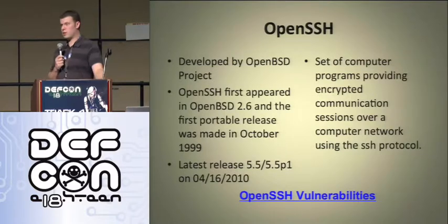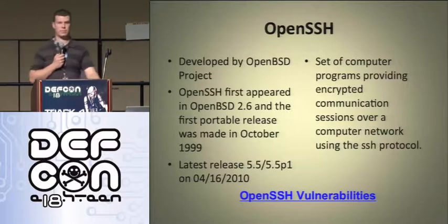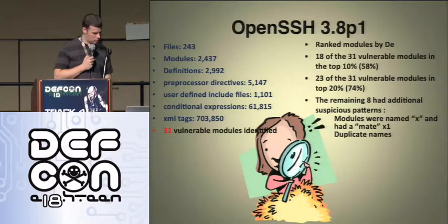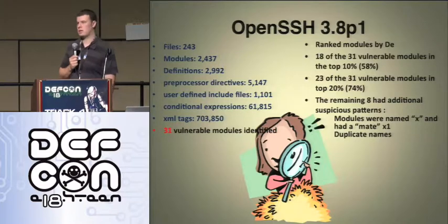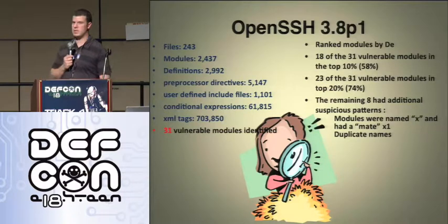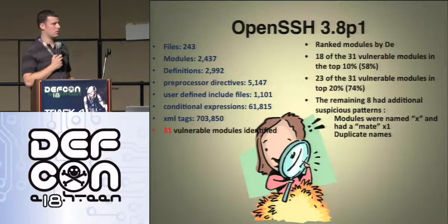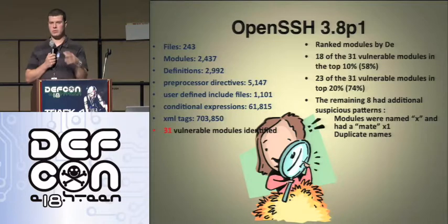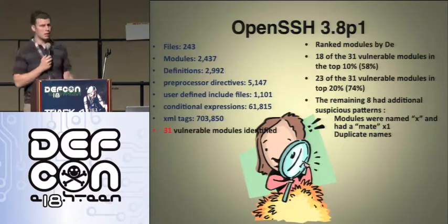Because of that finding, if you were going to analyze web browsers, you would want to give more weight to the DSM — data structure manipulation — than to anything else. For OpenSSH version 3.8P1, 31 vulnerable modules were identified, and 18 of the 31 were in the top ten percent. That makes your life a lot easier when looking for security bugs. There could also be unknown vulnerabilities in that top ten percent, so our numbers could actually be higher — we were only looking at existing reported vulnerabilities, not doing full source code auditing.